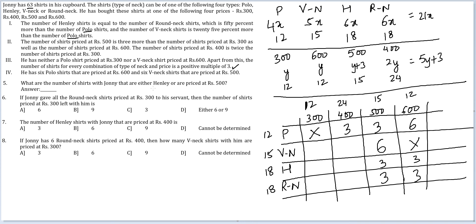First question: what is the number of shirts with Johnny that are either Henley or priced at 500? Henley shirts total 18 and shirts priced at 500 total 15, but there's an overlap of 3. So 18 plus 15 minus 3 gives 30. The answer is 30.